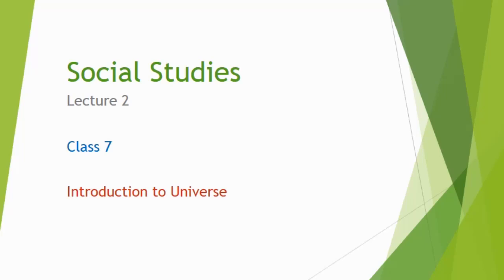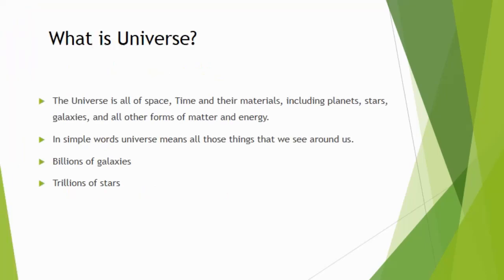What is meant by universe? The universe is all of space, time, and their materials, including planets, stars, galaxies, and all other forms of matter and energy. In simple words, universe means all those things that we see around us. All the planets and stars that we see in the sky at night are also part of our universe.